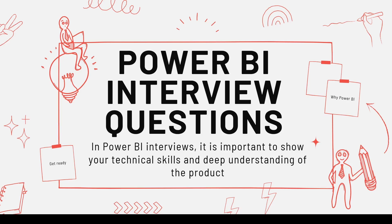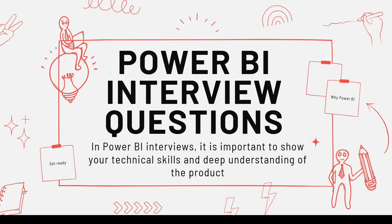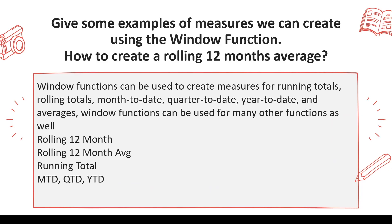Welcome to another video on Power BI interview questions. Hope you're watching this series from the beginning. The next question which you may be asked is: give some examples of measures we can create using the window function, or how to create rolling 12 months averages. Rolling 12 months averages can also be created with the help of DATESINPERIOD, but the window function can also help.